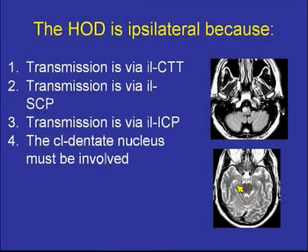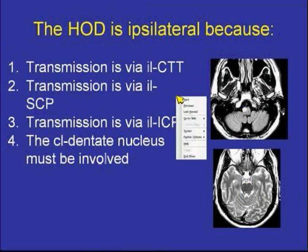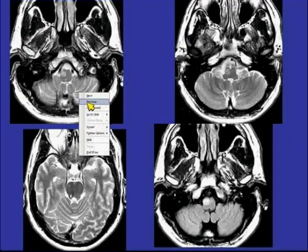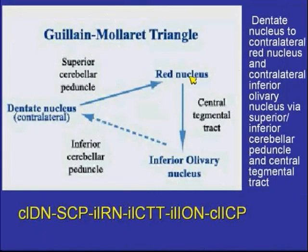This is due to involvement of the central tegmental tract. The central tegmental tract is involved with that cavernoma, leading to ipsilateral inferior olivary nucleus hypertrophic degeneration.